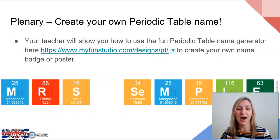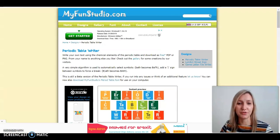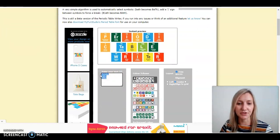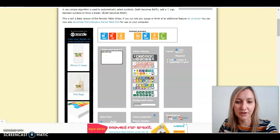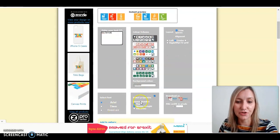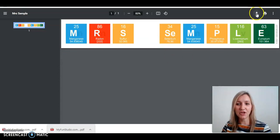To finish up today's lesson, I wanted to share a really fun name generator that I've used to make posters for my lab and home learning classroom. This is the myfunstudio.com periodic table writer and it's really easy to use. When you scroll down the page, you'll see where you can enter your text — type in your name or any text you'd like to generate as periodic table element symbols. You can then choose your preferred colour scheme, a font, and what you want it to show — atomic number, names, atomic weights, or electrons. You can then download this as a PDF or PNG file and save it to your computer to use digitally or print out.